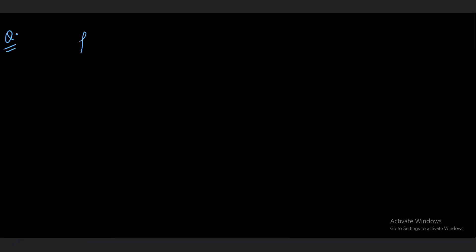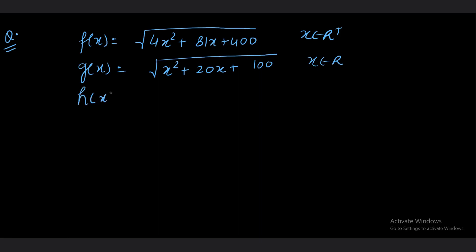The question we have is: a function f(x) is root over some quadratic, it is root over quadratic for x belonging to R plus. g(x) is root over x square plus 20x plus 100, again x belongs to real, and h(x) is also defined as f(x) minus twice of g(x).